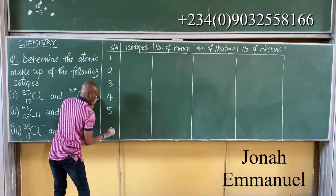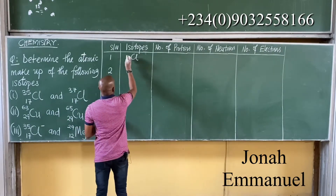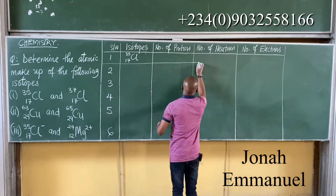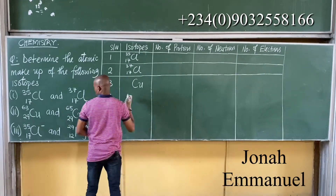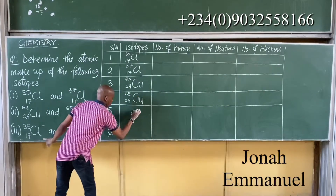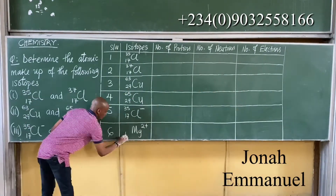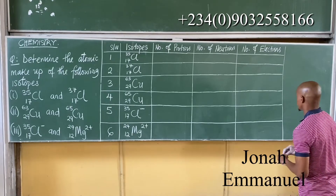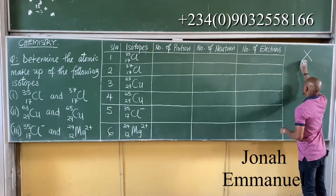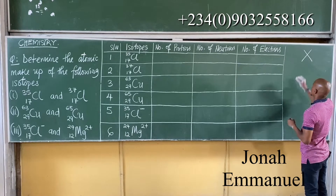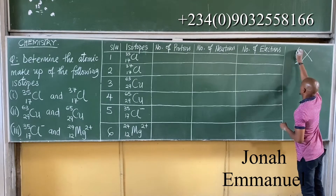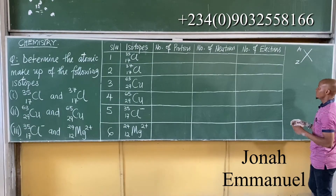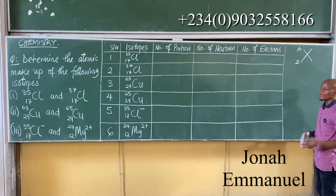So I have six isotopes in total. The first one here is Chlorine-35 with atomic number 17. Now here is what we learn: if I have an atom X having atomic number Z and mass number A, this is called a nuclide symbol — a simplified symbol showing the atomic number and mass number of an element.